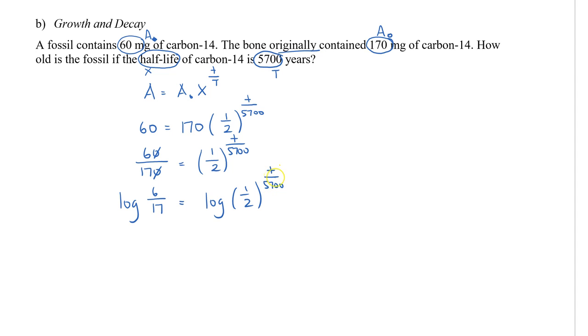I'll have log of a half to the power of T over 5,700. We're going to move that exponent to the front. I don't want you to use a calculator until everything is all set up so that we don't have any rounding issues at the end. Multiply both sides by 5,700.